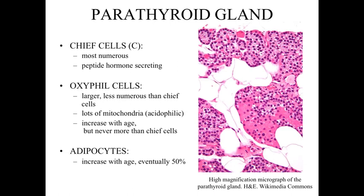Over time, with age, the number of oxaphil cells is gradually going to increase, but we're always going to have more chief cells than oxaphil cells. Early on, we've got a few adipocytes scattered throughout the tissue, but with age, we're going to see involution of the organ. The number of adipocytes, the number of white fat cells — that chicken wire appearance — is going to gradually increase and take up about 50% of the structure within the parathyroid gland.